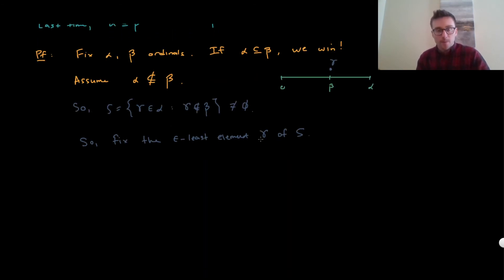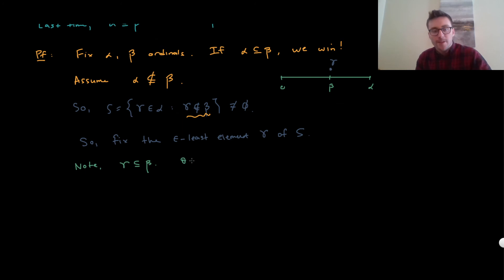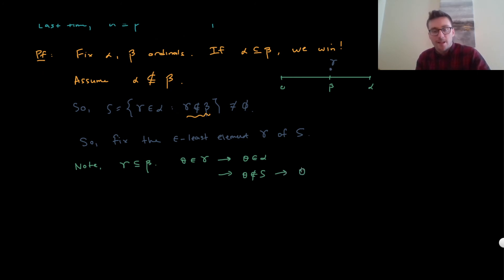What do we know about gamma? It's in alpha and not an element of beta. One key observation is that gamma must be a subset of beta. Why? If theta is an element of gamma, then since alpha is transitive, theta must be in alpha. And since gamma is the least element of S, theta is not in S. So theta must be in beta — that's the only other option. So gamma is a subset of beta.